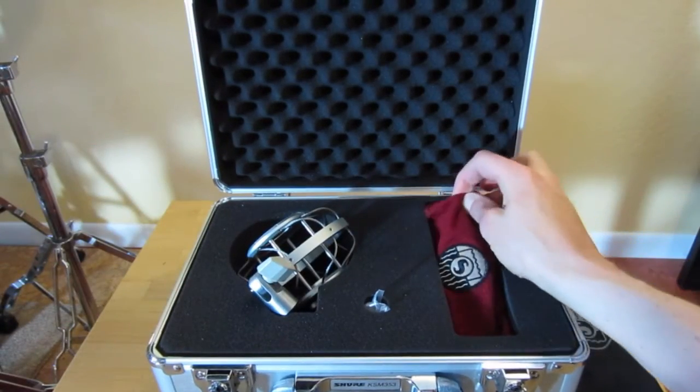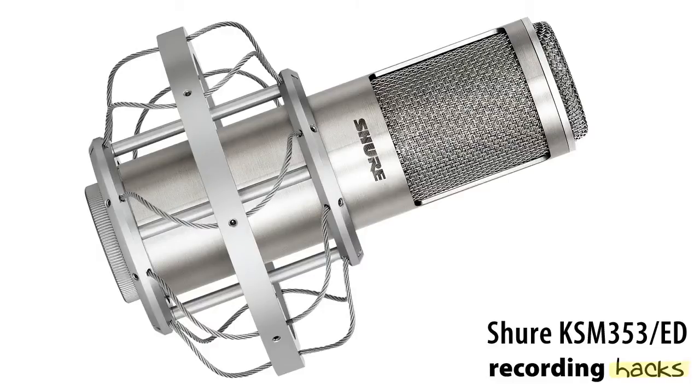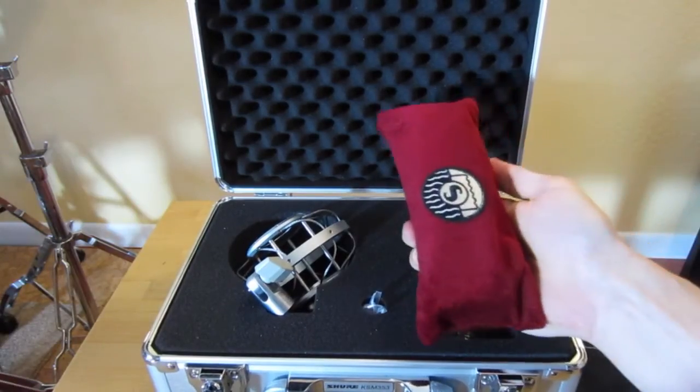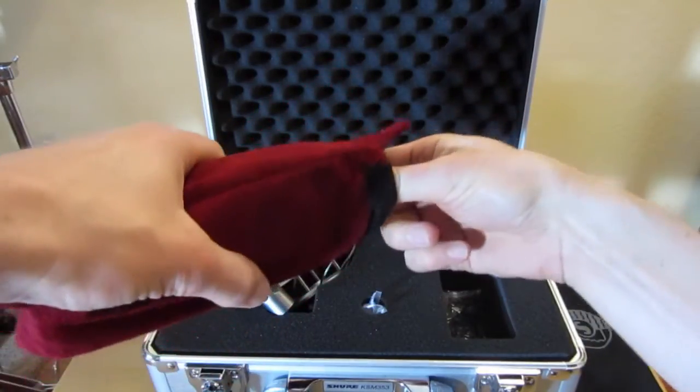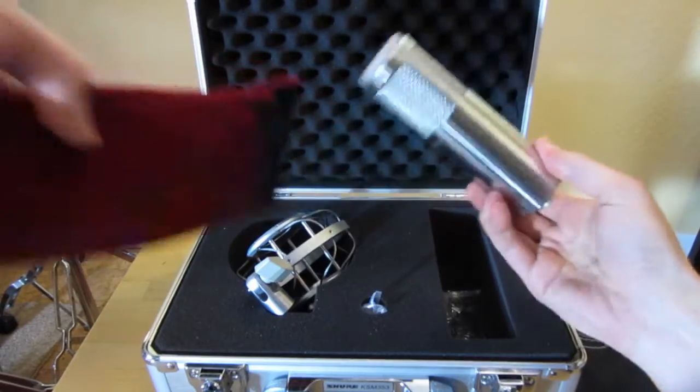In here, in a Velcro-sealed storage pouch, is the microphone itself. The nice thing about the storage pouch is that it's lint-free, so you won't risk getting a bunch of crud in your microphone.